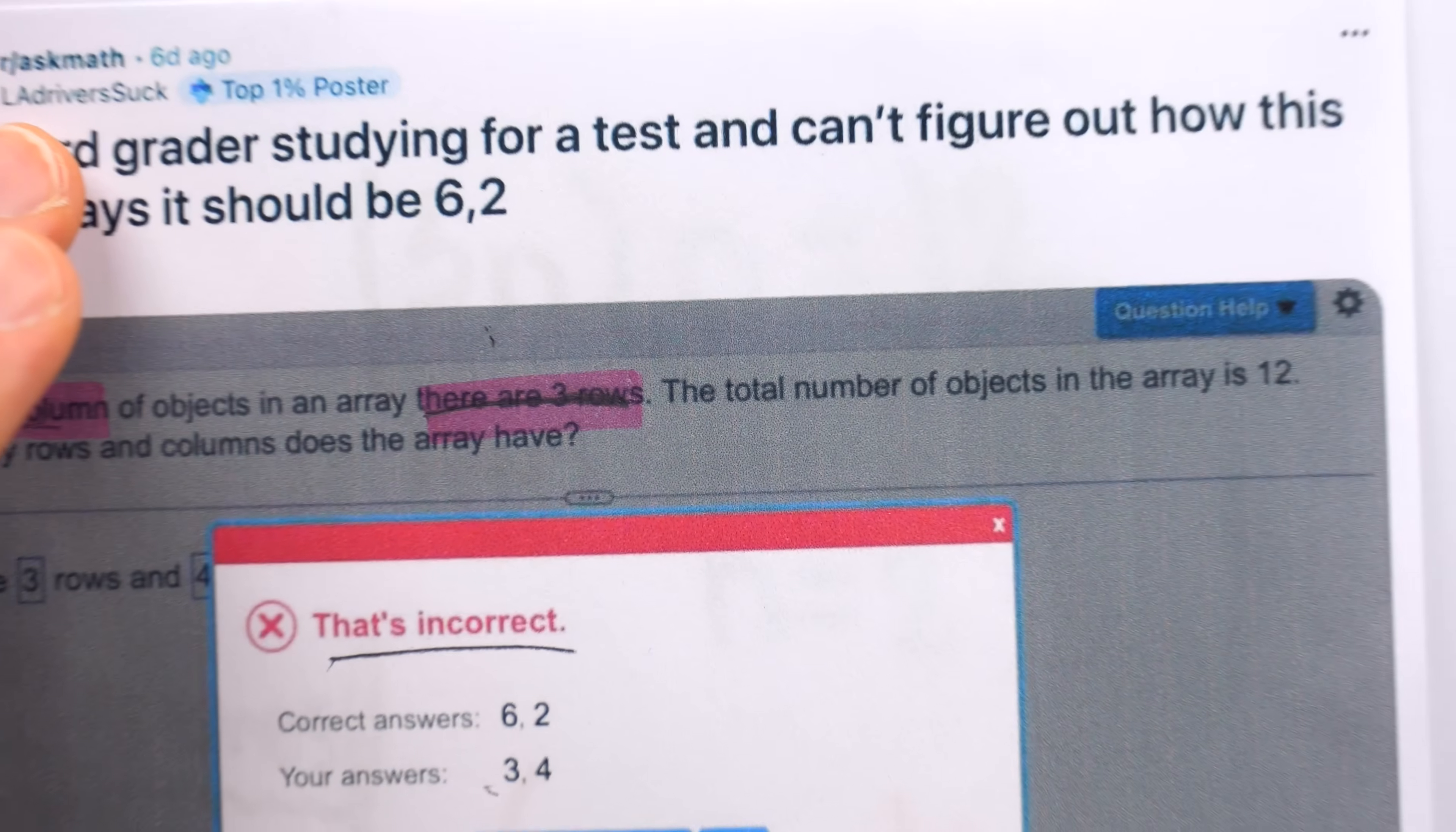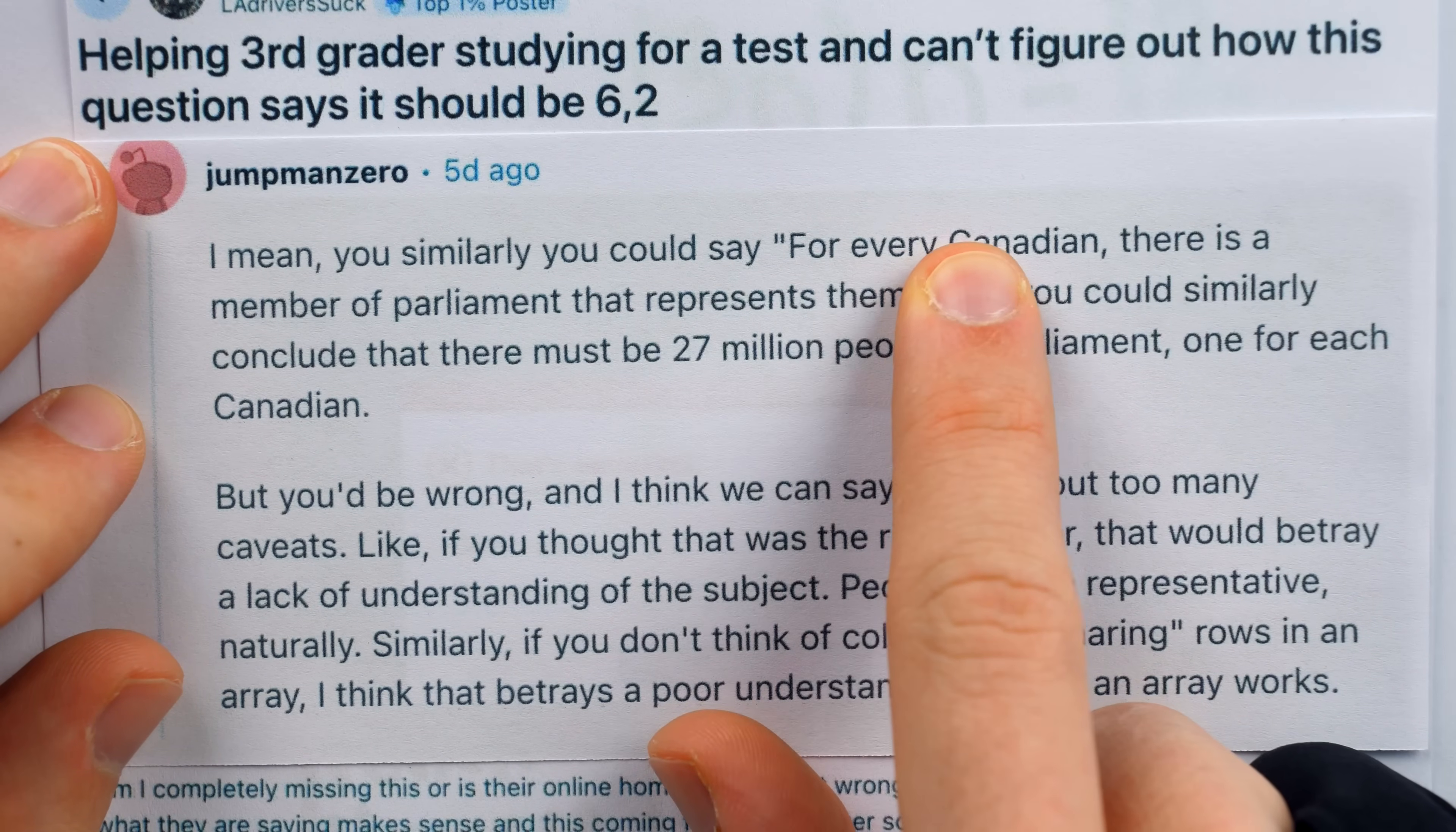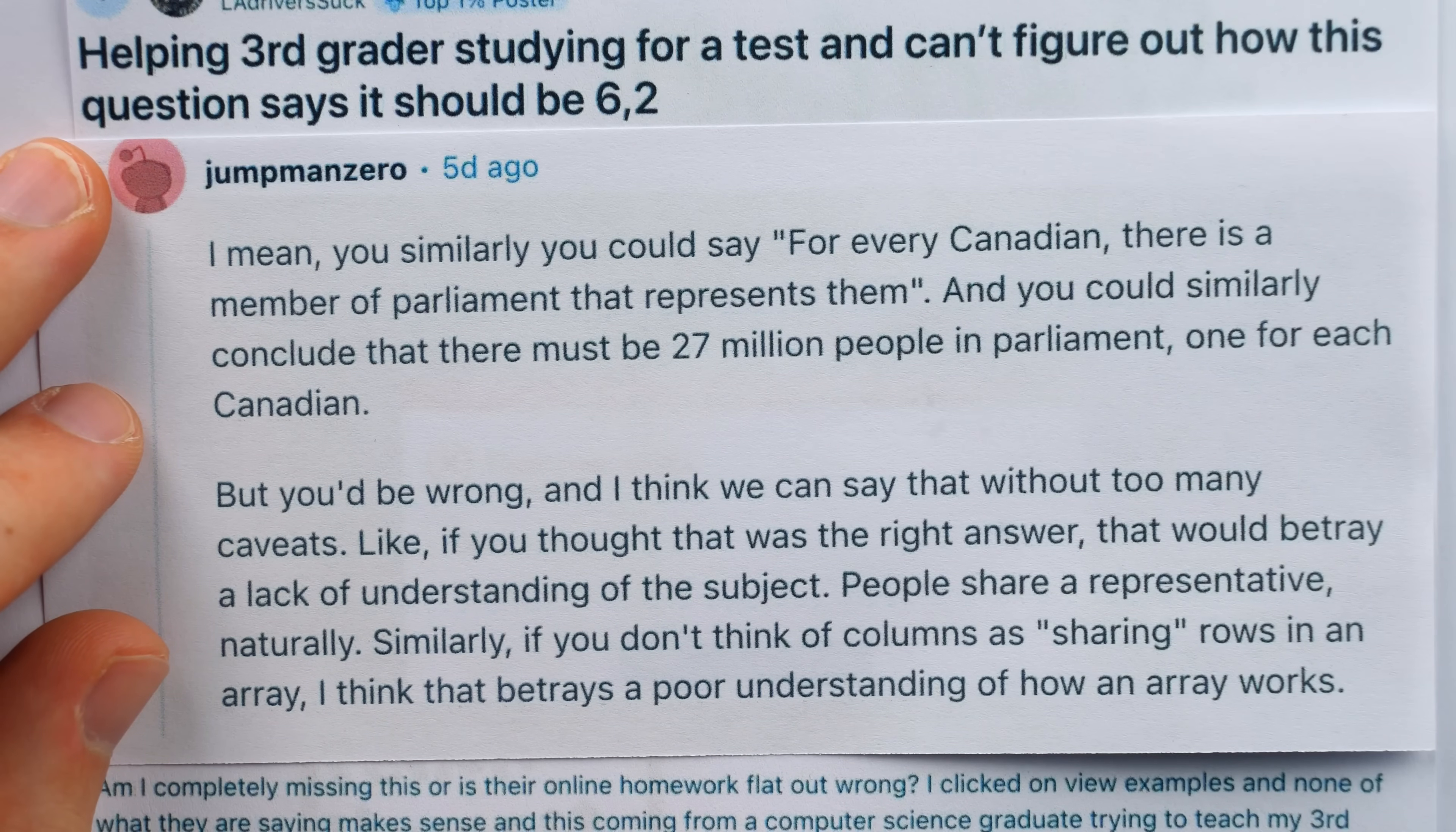Of course, this question sparked many disagreements. Many people sided with the OP, thinking that his understanding was perfectly natural and that the question's wording was poor and misleading. To defend the OP, Jumpman Zero uses the classic Canadian Parliament analogy. You could say, for every Canadian, there is a member of Parliament that represents them, and using the same logic that the question enforces, you could conclude there must be 27 million people in Parliament. But just as rows extend across columns, a member of Parliament represents multiple people from the Canadian populace.